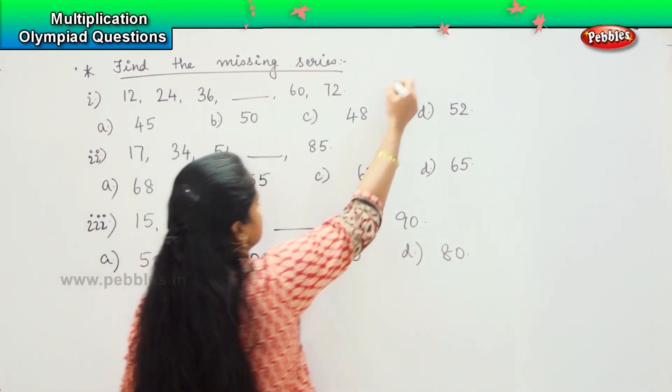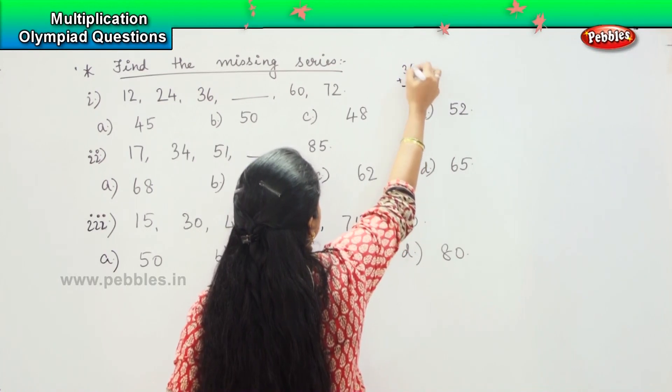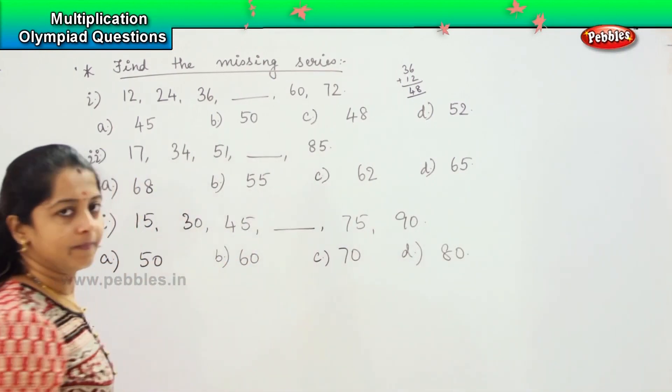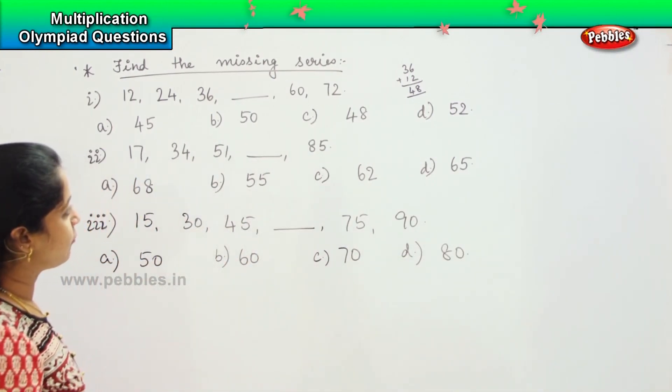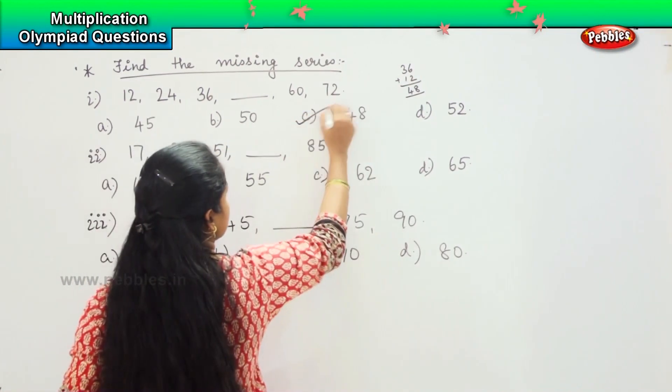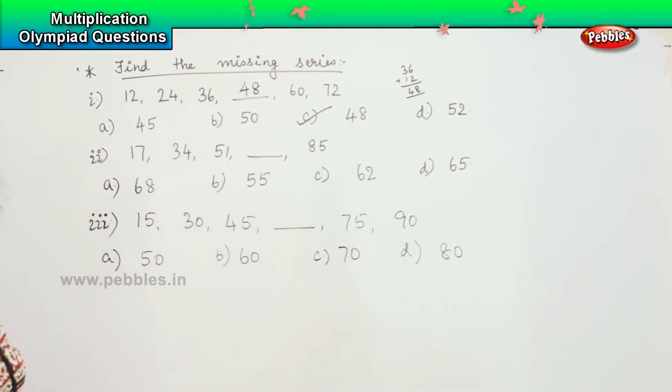Just see here, 36 plus 12, how much? 6 plus 2 is 8, and 3 plus 1 is 4. So what should be my answer here? 48. Where can you find 48, children? Option C. So my answer here will be 48.